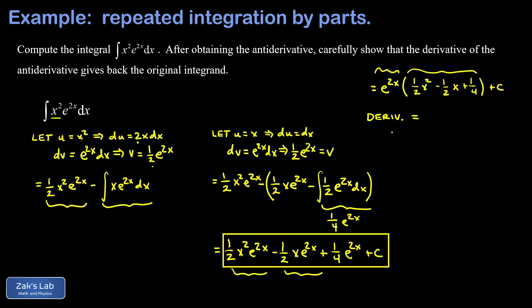To use the product rule, I take the derivative of the first function e to the 2x, and that gives me 2e to the 2x, and I leave this polynomial alone. Then I have a term where I leave the e to the 2x alone and take the derivative of this polynomial. The derivative of one half x squared, you bring down the power of two and I get x. The derivative of negative one half x is negative one half, and the derivative of one fourth is zero and the derivative of c is zero. There's our first derivative.